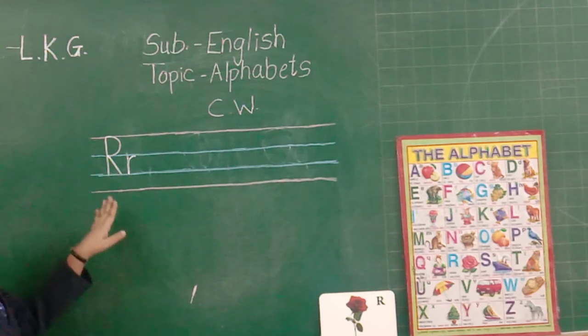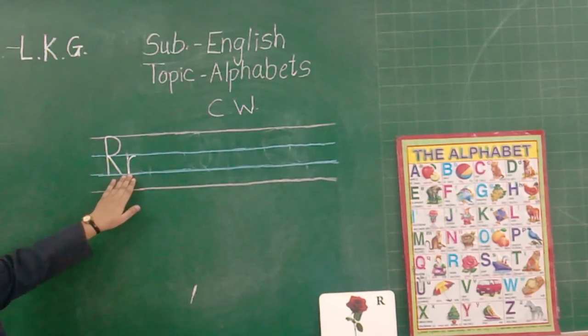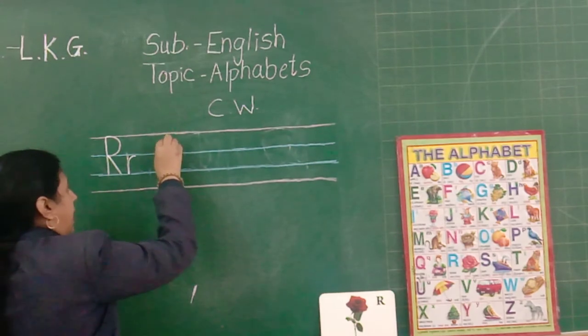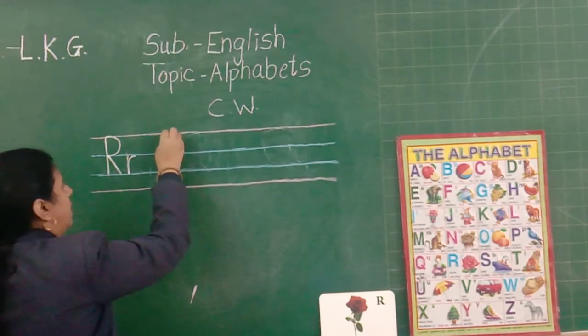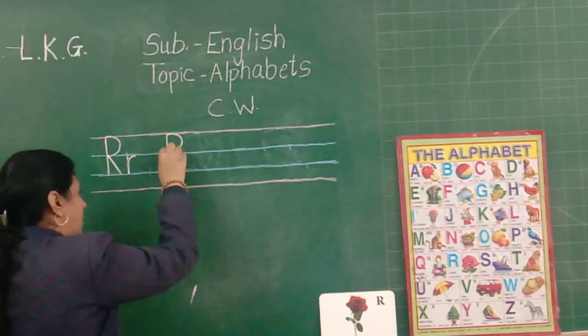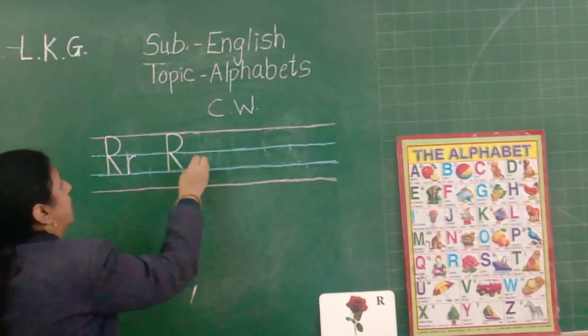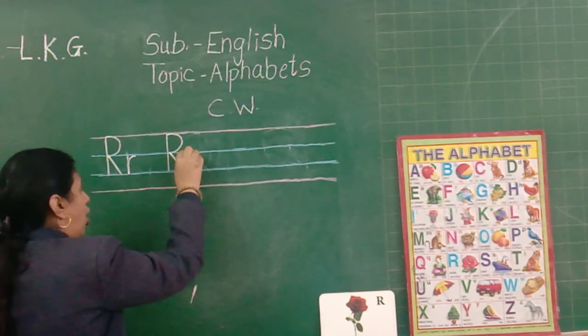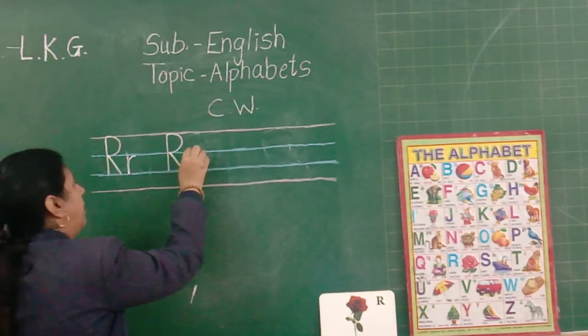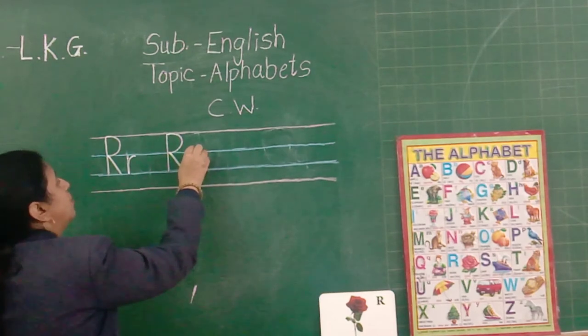Look here. Capital R and small r. Capital R: slant, curve, slant. Small r: standing line, comma, and small curve.